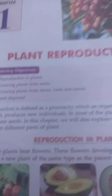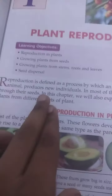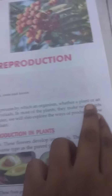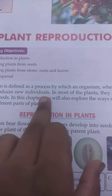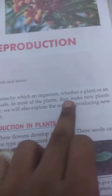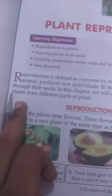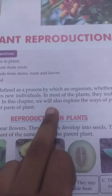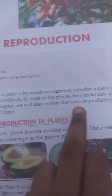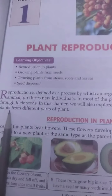We will also cover growing plants from stems, roots, and leaves, and seed dispersal. Reproduction is defined as a process by which an organism — whether a plant or an animal — produces new individuals. Most plants make new plants through their seeds. In this chapter we will also explore the ways of producing new plants from different parts of plants.